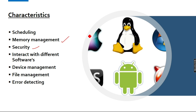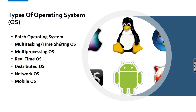These are the characteristics of the operating system. There are different types of operating systems: batch operating system, multitasking, time-sharing OS, multiprocessing OS, real-time OS, distributed OS, network OS, and mobile OS.